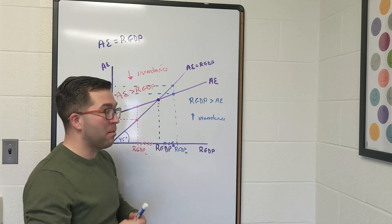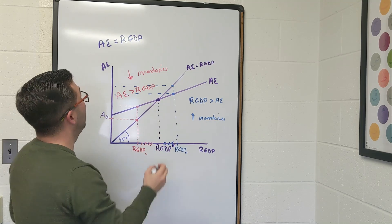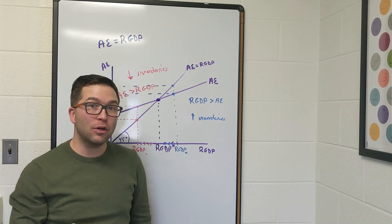That's why when we have the market forces taking place, we can say we're going to get to a single point right here where aggregate expenditure equals real GDP. And that's what we call the macroeconomic equilibrium.